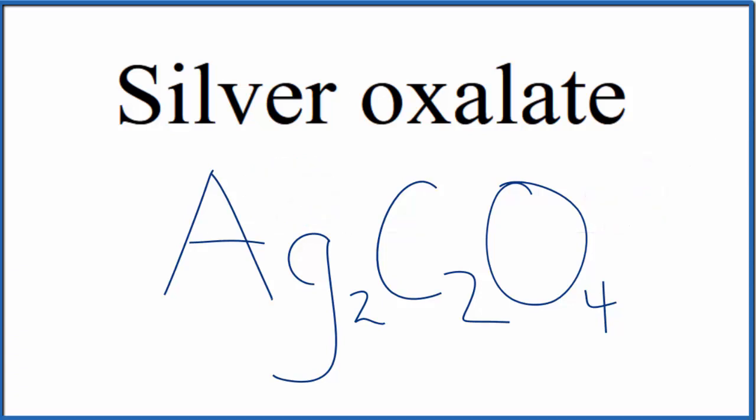So this is the formula for silver oxalate, Ag2C2O4. And this C2O4 here, that's the oxalate ion.